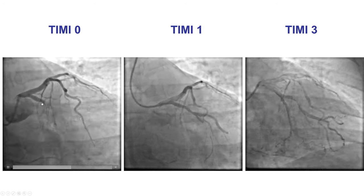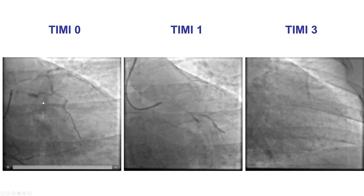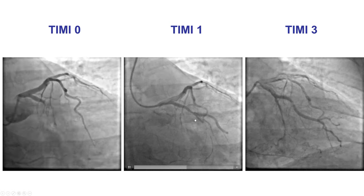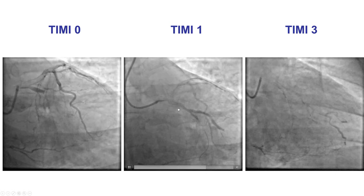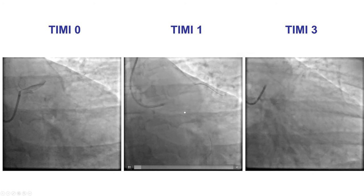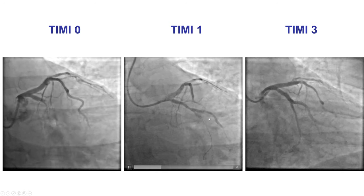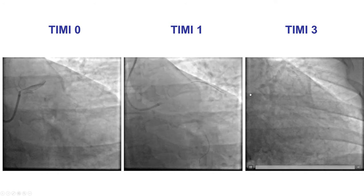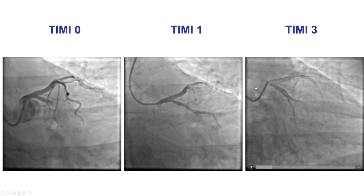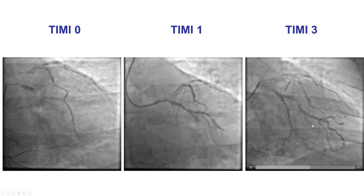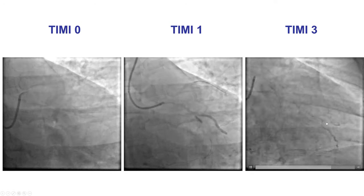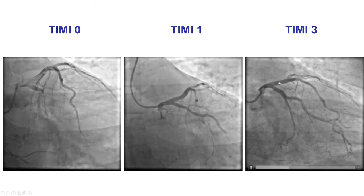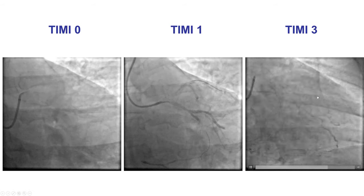This is an example of TIMI 0 — there is no flow past the circumflex. After balloon angioplasty, there is now TIMI 1 flow: some contrast penetration but not reaching the end of the artery. After stenting, there is TIMI 3 flow, with good antegrade flow all the way to the end of the artery at the same speed as flow in the non-involved LAD.